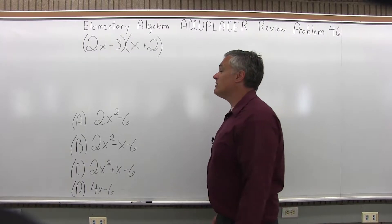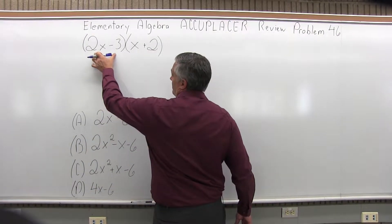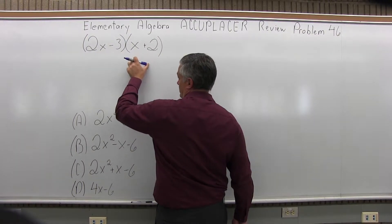So what I need to do is multiply out the parentheses and combine whatever can be combined. Both pieces from the 2x minus 3 have to be multiplied times both pieces in the x plus 2.